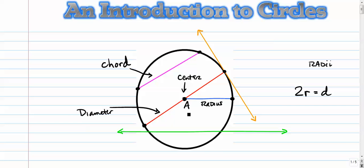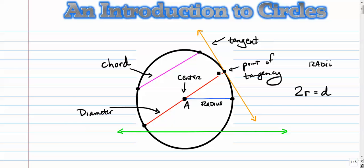Over here in orange, this is called a tangent. Tangent lines intersect with circles at exactly one point, and that point is called the point of tangency. If you have a diameter or radius that also goes to that point of tangency, then there's a right angle there — the tangent and the radius are perpendicular. And finally, the green line down here is a secant line. It goes through the circle and keeps going, so it doesn't stop like a chord would.